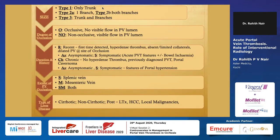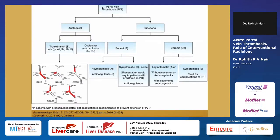Before we decide what to do, our practice is to classify portal vein thrombosis both anatomically and functionally. The anatomical classification considers where the thrombus is, whether it's occlusive or non-occlusive, whether there are symptoms, and the duration — which is quite important. The functional classification considers whether it's acute, sub-acute, or chronic, and whether the splenic vein, mesenteric vein, or both are involved.